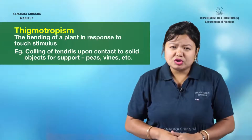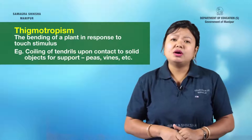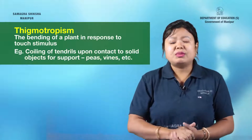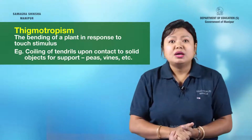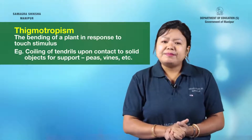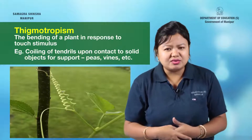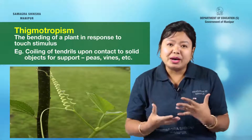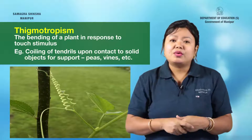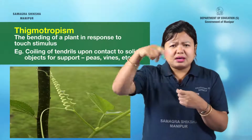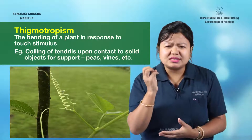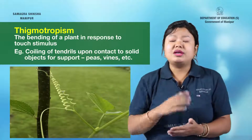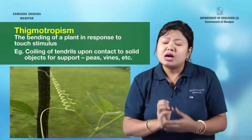The next tropic movement is thigmotropism — the movement of plants in response to touch. For example, the coiling of tendrils. Tendrils have a thread-like structure, and when they encounter a solid object to support the plant, they coil around it as a stimulus response.